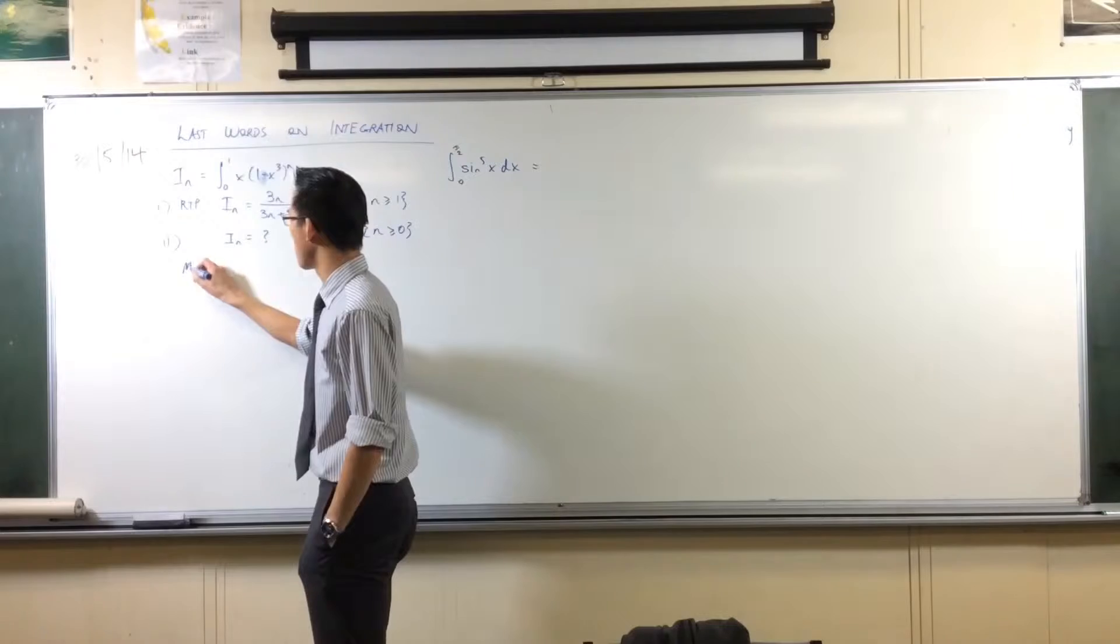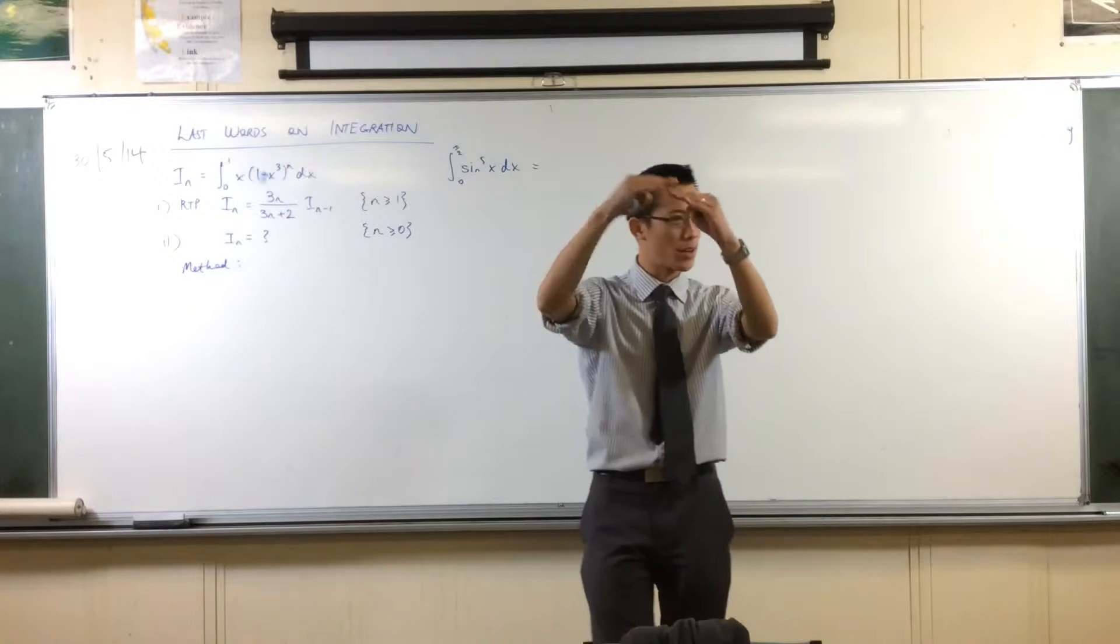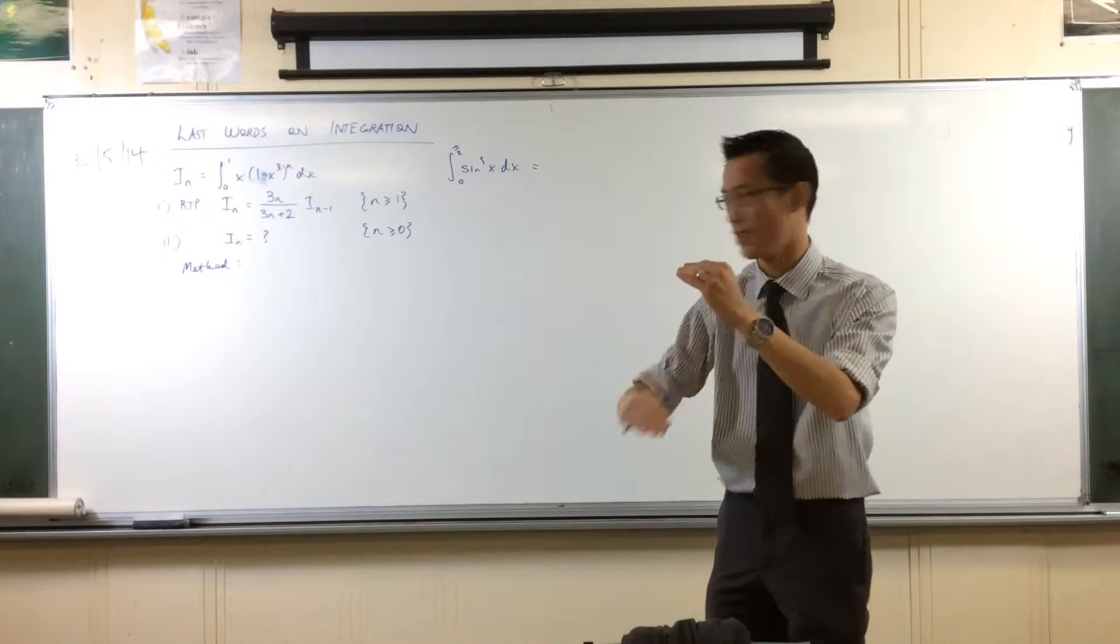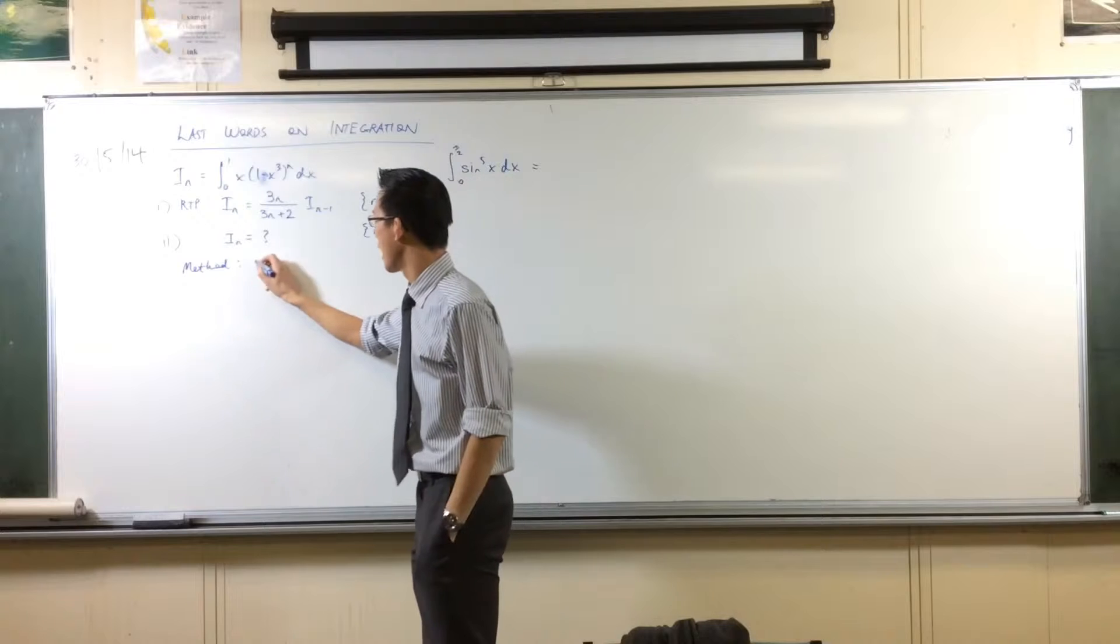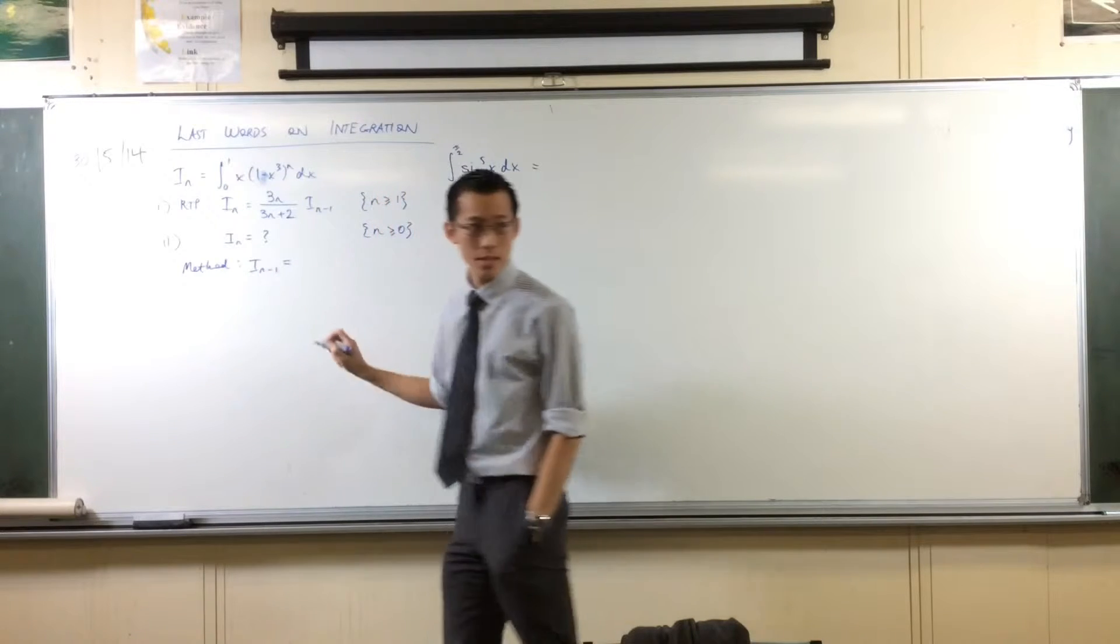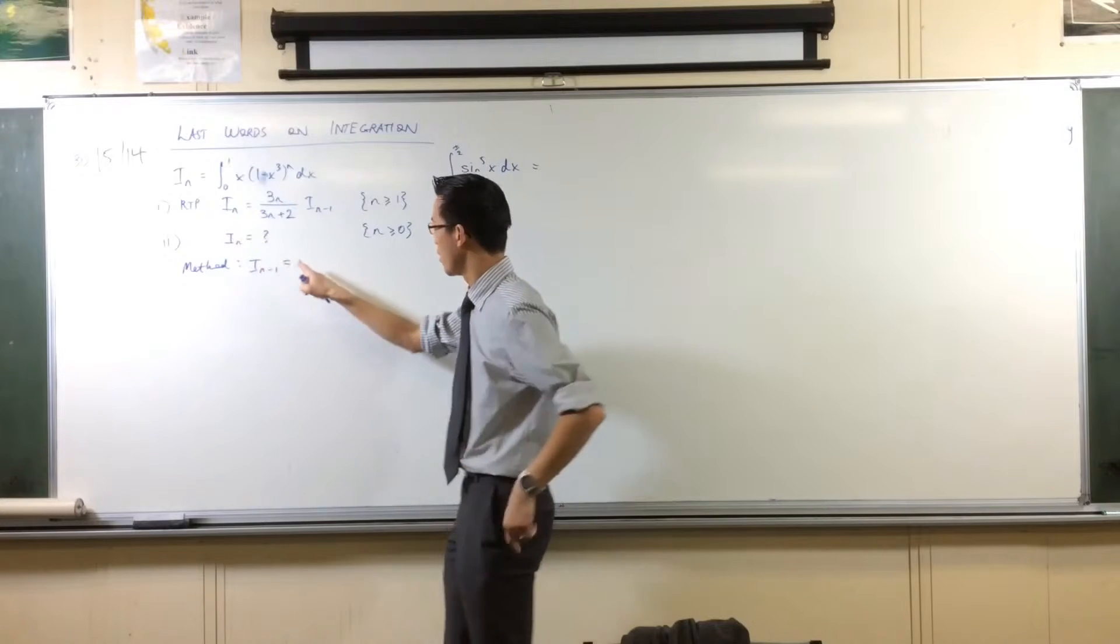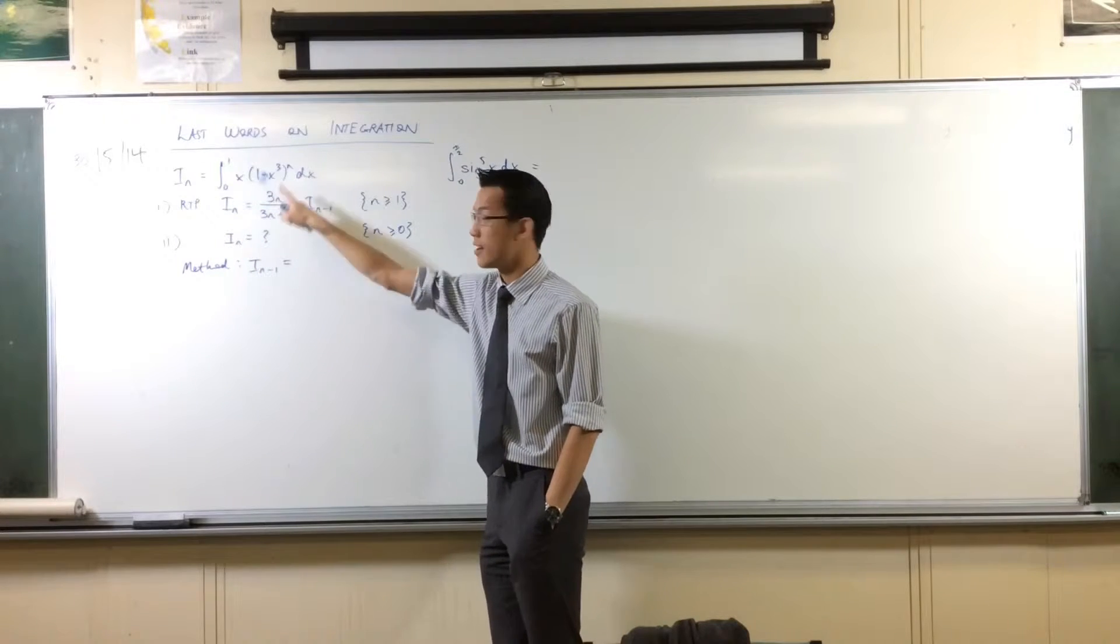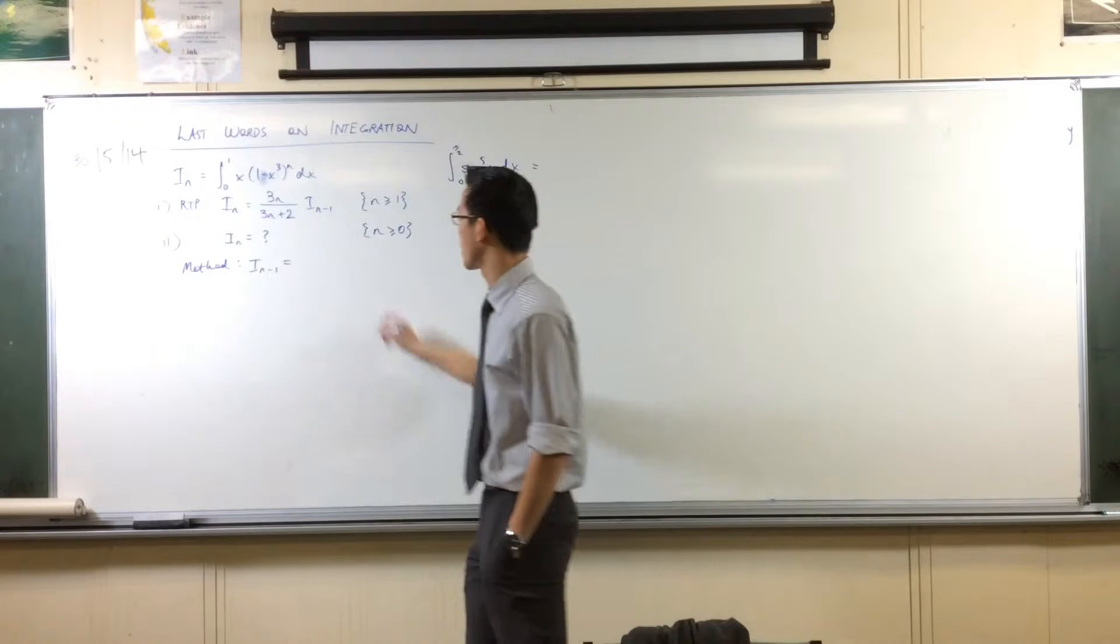So here's the way we're going to unpack it. This is I_n. Here's my method. I'm going to think of the recurrence relation kind of like a ladder. I want to step down it. From this step, I can go to the previous step. I can know what I_{n-1} is because it should follow the same pattern.